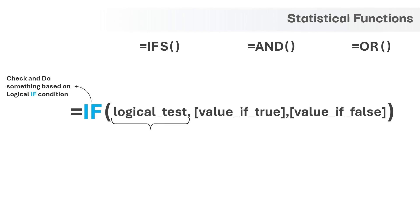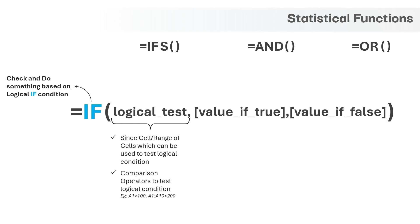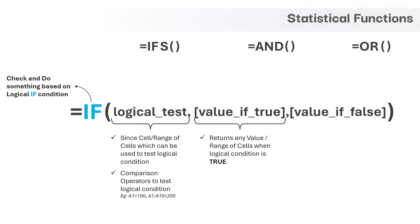The first argument is to check a logical condition whose output will be either true or false. We can give a single cell or range of cells as input and we need to use comparison operators to test the logical condition. The second argument will come into play when the logical condition is true and we can provide any value as input to this argument. It is like taking some action if the logical condition is true.